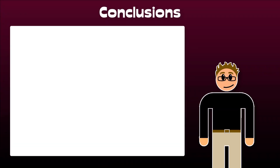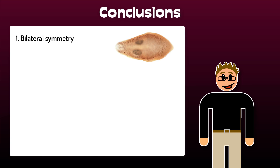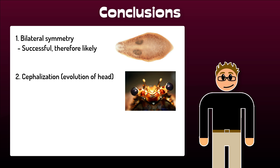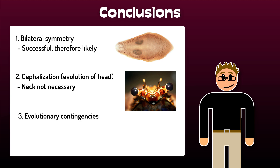So what can we take away from all this? Even though bilateral symmetry possibly only originated once on our planet, its success here makes it likely that the same can be expected to evolve on other planets. This would then also likely lead to cephalization and therefore a head — though not necessarily a neck. Exactly how this pans out depends on the historical quirks of past evolution. In a future video I will talk about evolutionary contingencies some more and dive into the details of the subsequent developmental constraints that shape the different animal bodies. Until next time, cheers and bye-bye.